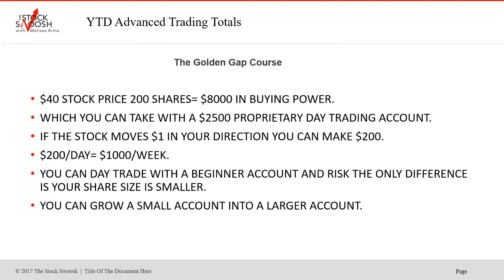If you had a $2,500 proprietary day trading account, you'd have 10-to-1 margin — $25,000 in margin — so you'd need $8,000 in buying power. You'd be able to take a trade with 200 shares at a $40 price. If the stock moves a dollar in your direction with 200 shares, you can make $200. $200 a day equals $1,000 a week, and most people are not making that trading because they don't know what they're doing. Successful traders in my room have done all the classes and are learning every day.